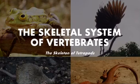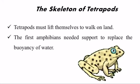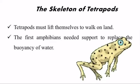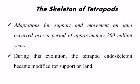The skeleton of tetrapods: Tetrapods are four-limbed animals and include amphibians, reptiles, birds, and mammals. Tetrapods must lift themselves to walk on land, and for the earliest terrestrial animals, support and locomotion were difficult and complicated processes. The first amphibians needed support to replace the buoyancy of water. Adaptations for support and movement on land occurred over approximately 200 million years, during which the tetrapod endoskeleton became modified for support on land.